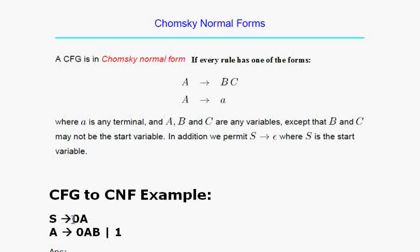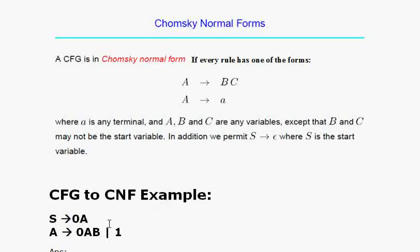Consider the rules S → 0A and A → 0AB. In the first rule, S → 0A, according to CNF we can only have two non-terminals on the right side, or only one terminal character on the right side. Here we have one non-terminal A and one terminal 0, so this does not satisfy CNF directly.